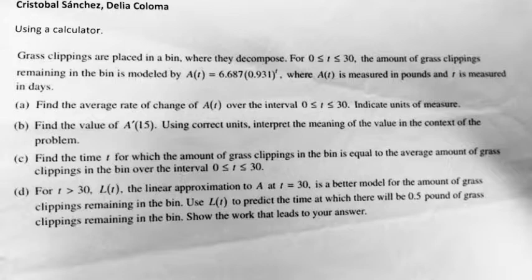Part A. Find the average rate of change of a of t over the interval 0 is less than or equal to t is less than or equal to 30. Indicate units of measure.